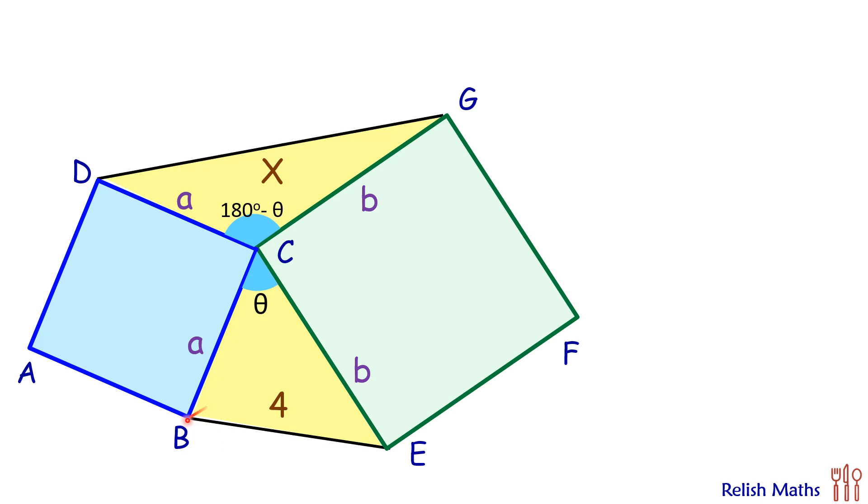The base here we'll take as CE, and the height is from the opposite vertex, that is BM. Now, here CE is b units, so it's half times b. And BM—now in this triangle BMC, it's a